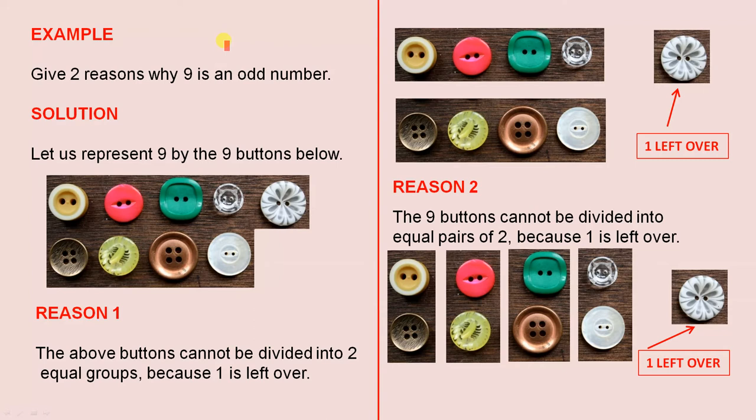Here is another example. Give two reasons why nine is an odd number. Here is the solution. Let us represent nine by the nine buttons below. It is easy to see that there are nine buttons here, quite straightforward, just count them.